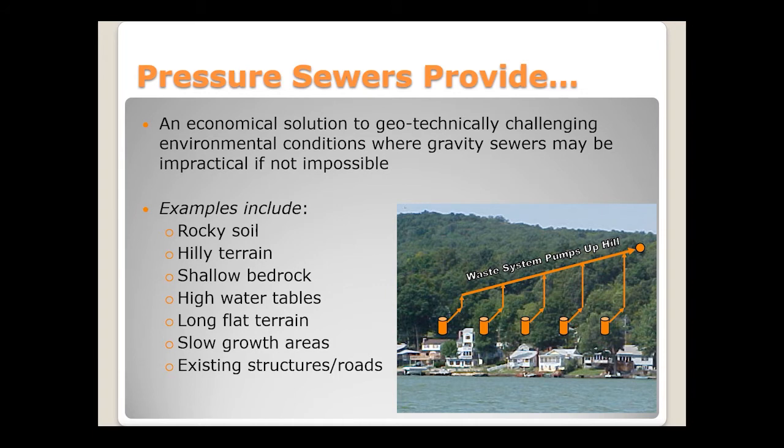A typical lake front property illustrates the advantages well. Homes right against the lake had failing septic tanks with waste going into the lake and polluting it. By installing pressure sewer, all waste is pumped up the hill, allowing use in areas where gravity just wouldn't work. Examples of ideal areas include rocky soil, hilly terrain, shallow bedrock, high water tables, long flat terrain, and areas with slow growth or existing infrastructure.